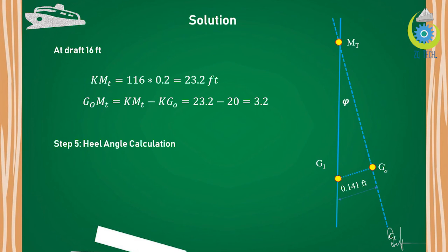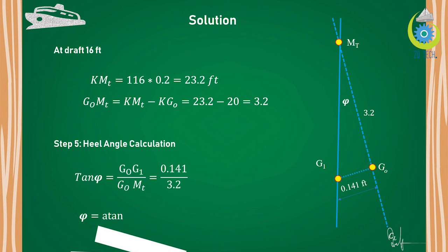The value of KMT is 23.2 feet and the G0MT value is 3.2 feet. Final step — heel angle calculation. The final triangle shows we have calculated G0G1 and G0MT, so moving forward with the formula, the heel angle calculated is 2.52° towards the starboard side. This is our heel angle.